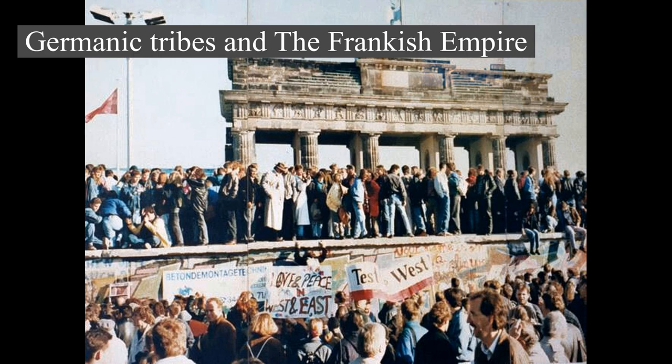Under Augustus, the Roman Empire began to invade lands inhabited by the Germanic tribes, creating a short-lived Roman province of Germania between the Rhine and Elbe rivers. In 9 AD, three Roman legions were defeated by Arminius. By 100 AD, when Tacitus wrote Germania, Germanic tribes had settled along the Rhine and the Danube, occupying most of modern Germany.